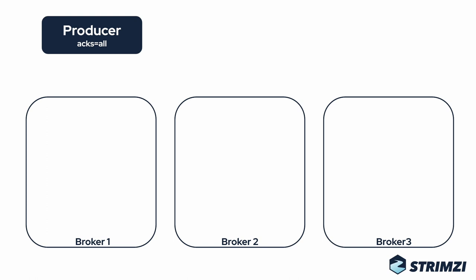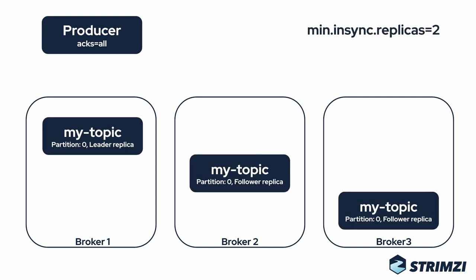Second, we need to configure the minimal number of in-sync replicas. This is a configuration of the topic — it tells the Kafka brokers how many replicas need to be in sync in order to accept new messages from producers. When the producer now sends the message, it will be first stored on the first broker and replicated to the other replicas. And only once it is safely replicated, it is acknowledged to the producer. This way, we know for sure that the messages are not just on the leader replica, but also on the other replicas. And if we lose the leader now, the messages will be still available.